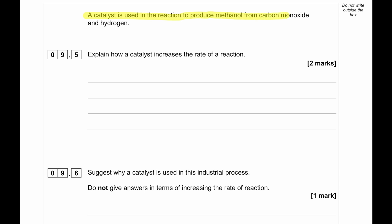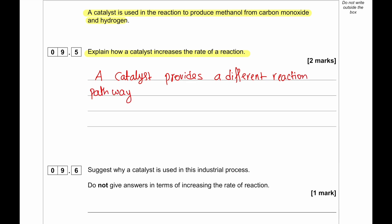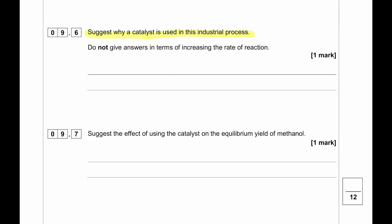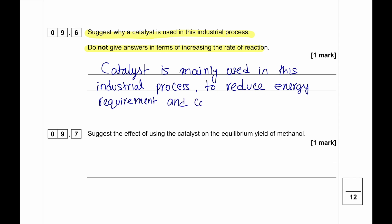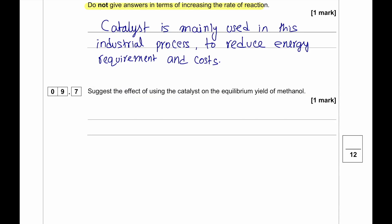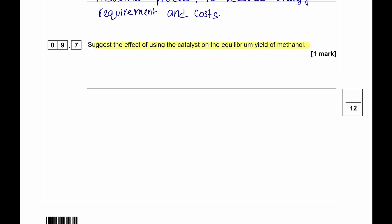A catalyst is used in the reaction to produce methanol from carbon monoxide and hydrogen. Explain how a catalyst increases the rate of a reaction. A catalyst provides a different reaction pathway which has a lower activation energy. So the rate of reaction becomes faster but requires a less amount of energy to do so. This is why catalyst is used in this industrial process. Catalyst is used in this kind of industrial process mainly to reduce the amount of energy that is needed to do the reaction. Because the energy comes from natural resources like natural gas, oil, or maybe renewable energy sources. All of these cost money. So to reduce cost and to use less energy, this catalyst is used. Suggest the effect of using the catalyst on the equilibrium yield of methanol. Using a catalyst does not have any effect on equilibrium yield on any reaction. So we will say no effect.